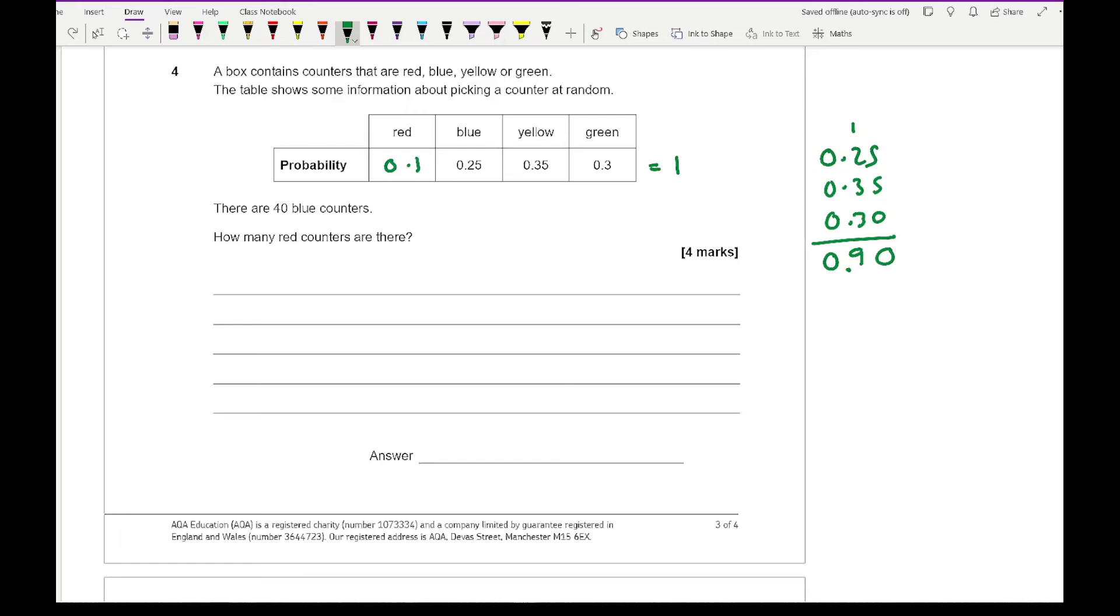Now, if there are 40 blue counters, which is going to be relatively important, so that means that if 0.25 is 40, which is 25%, so in other words, 25% equals 40, 50% is therefore going to be 80, and 100% is therefore going to be 160. So there are a total of 160 counters. Now, in terms of the red counters, red counters are 0.1, so if I do 0.1 times 160, I should have the answer of 16.